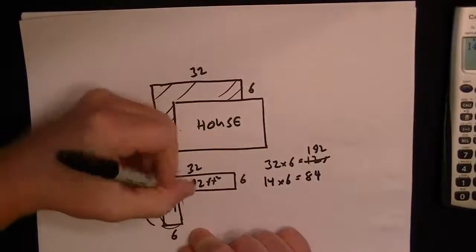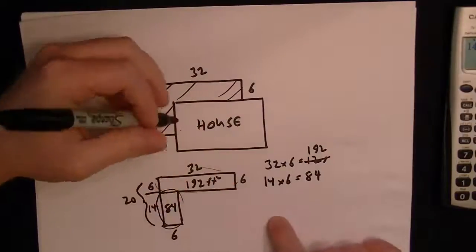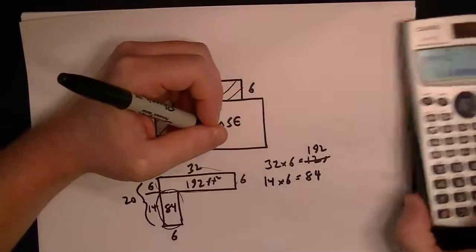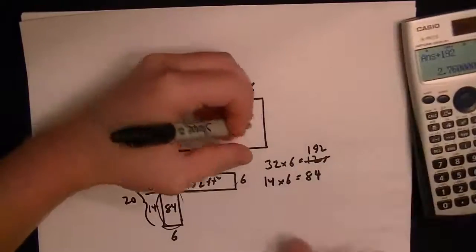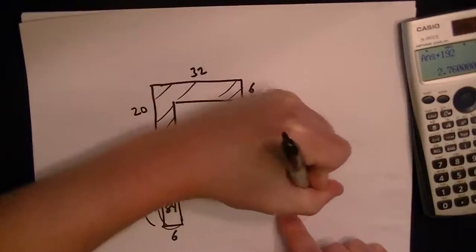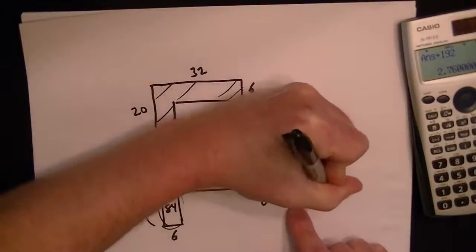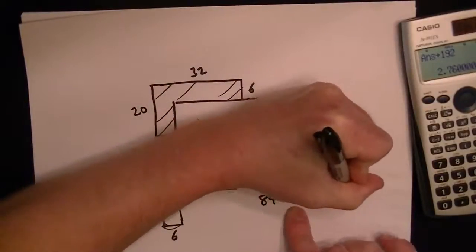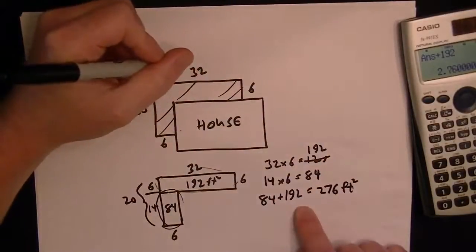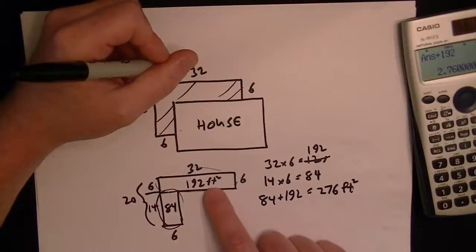So now we've got the 84 square foot in this section here and then we've got the 192 in this section. So you can just add them up to get the total. So 84 plus 192 equals 276 square foot. So that's the answer.